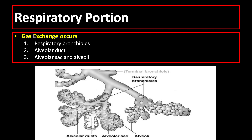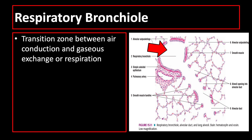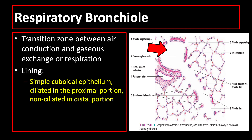The last structures composing the respiratory portion are the respiratory bronchiole, alveolar ducts, and alveolar sacs and alveoli. The respiratory bronchiole is the first part of the respiratory portion and the transition zone between air conduction and gas exchange. It is lined by simple cuboidal epithelium, ciliated in the proximal portion and non-ciliated in the distal portion, with the presence of smooth muscle.